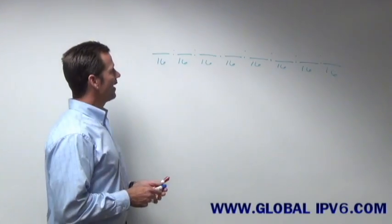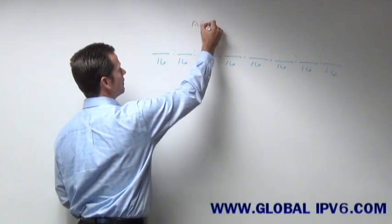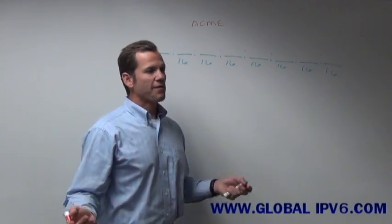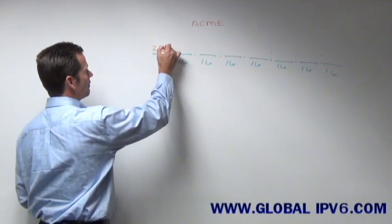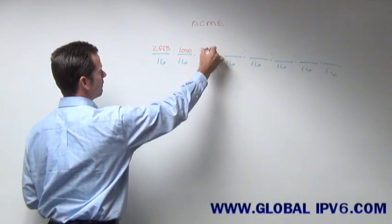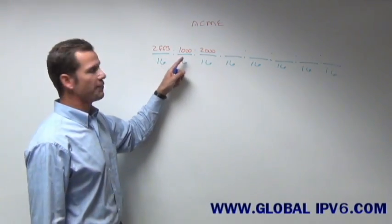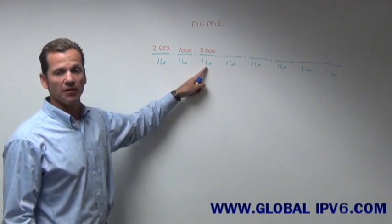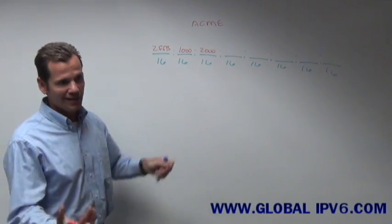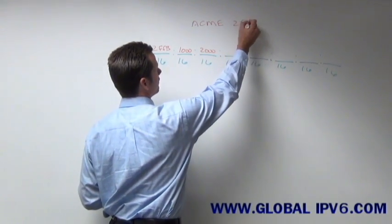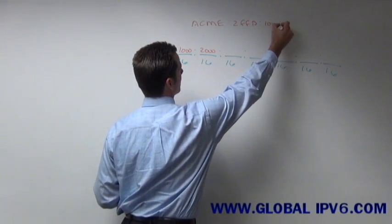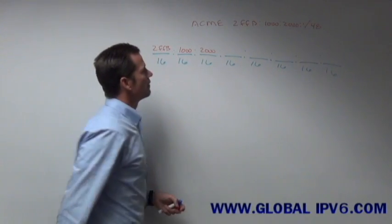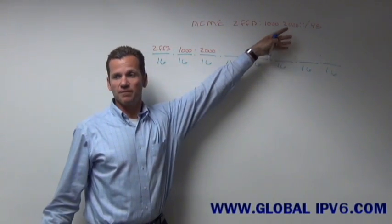So let's say we had the ACME Corporation, and ARIN assigns them a prefix of 2FFB:1000:2000. Well, if you add this up, it's 16 plus 16 plus 16, would be 48. So a lot of times this would be written as ACME received 2FFB:1000:2000 slash 48.